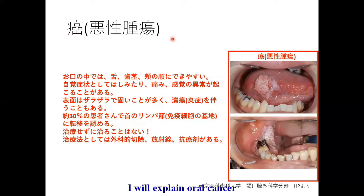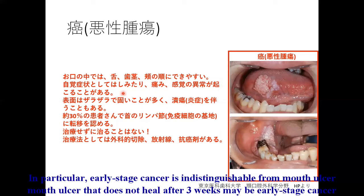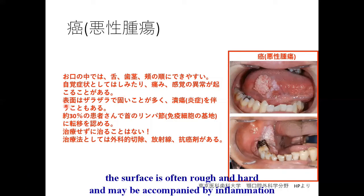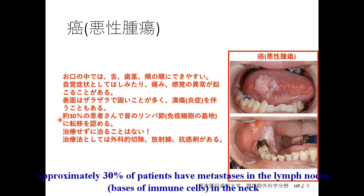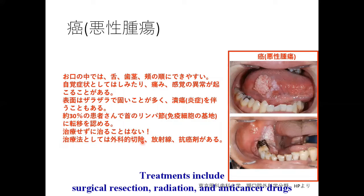I will explain more about oral cancer. In the mouth, it tends to form on the tongue, gum, and cheeks, and symptoms may include pain and abnormal sensations. Early stage cancer is indistinguishable from mouth ulcers, and ulcers that do not heal after three weeks may be early stage cancer. The surface often appears rough and may be accompanied by ulcers or inflammation. Approximately 30 percent of patients have metastasis in the lymph nodes in the neck. It will never heal without treatment. Treatment includes surgical removal, radiation, and anti-cancer drugs.